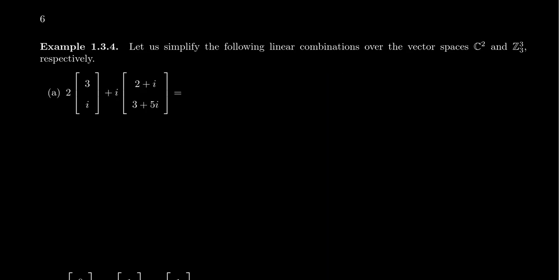Now, if you just look at two examples here, this first one, let's compute a linear combination for a vector in C2. So this is the complex vector space with two entries. So our vectors will look like column vectors with two components using complex numbers here. So in this linear combination, we have 2 times the vector 3i, and we have i times the vector 2+i and 3+5i.